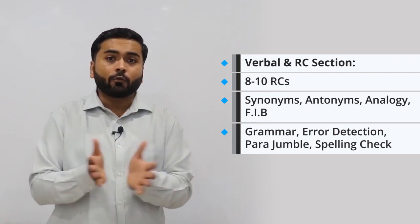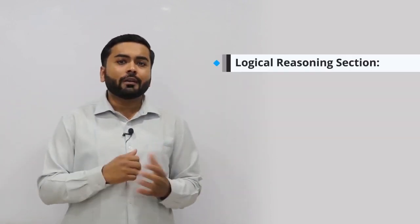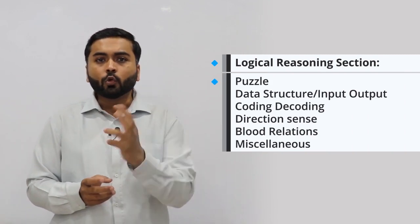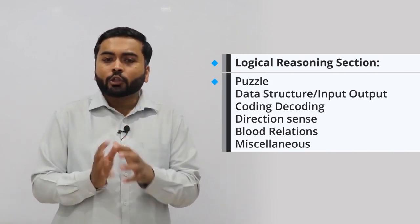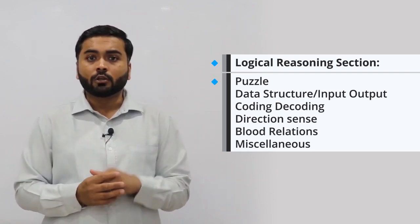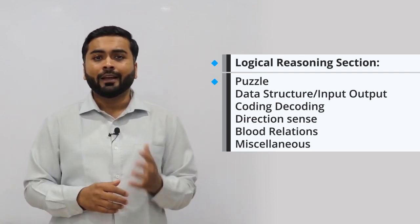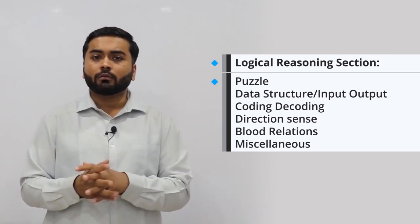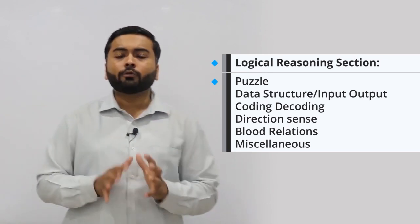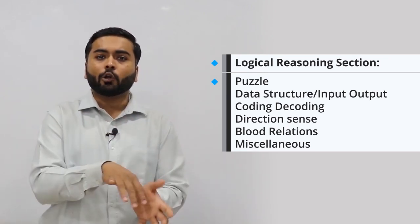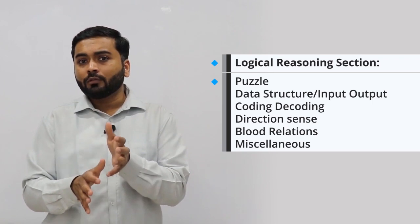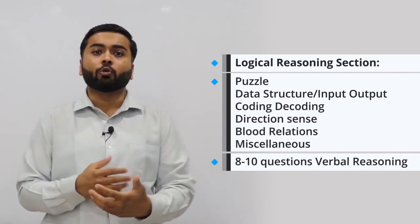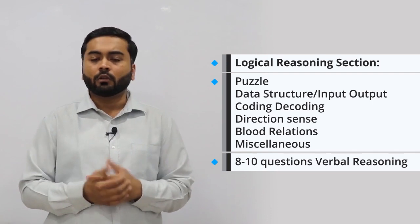Coming to Logical Reasoning section, again it's very traditional paper where you'll have some questions on puzzles arrangement, around two sets of puzzles arrangement. Then you'll have sets on input output, that is data structure. You'll have questions on coding decoding, direction sense, then you have blood relation, number series, odd man out, analogies, all the types of questions that you can think of in logical reasoning will be part of this section. Apart from around 8 to 10 odd questions on verbal reasoning, verbal logic, which will include syllogisms, statement argument, statement assumption conclusion, strengthen weaken type of questions.